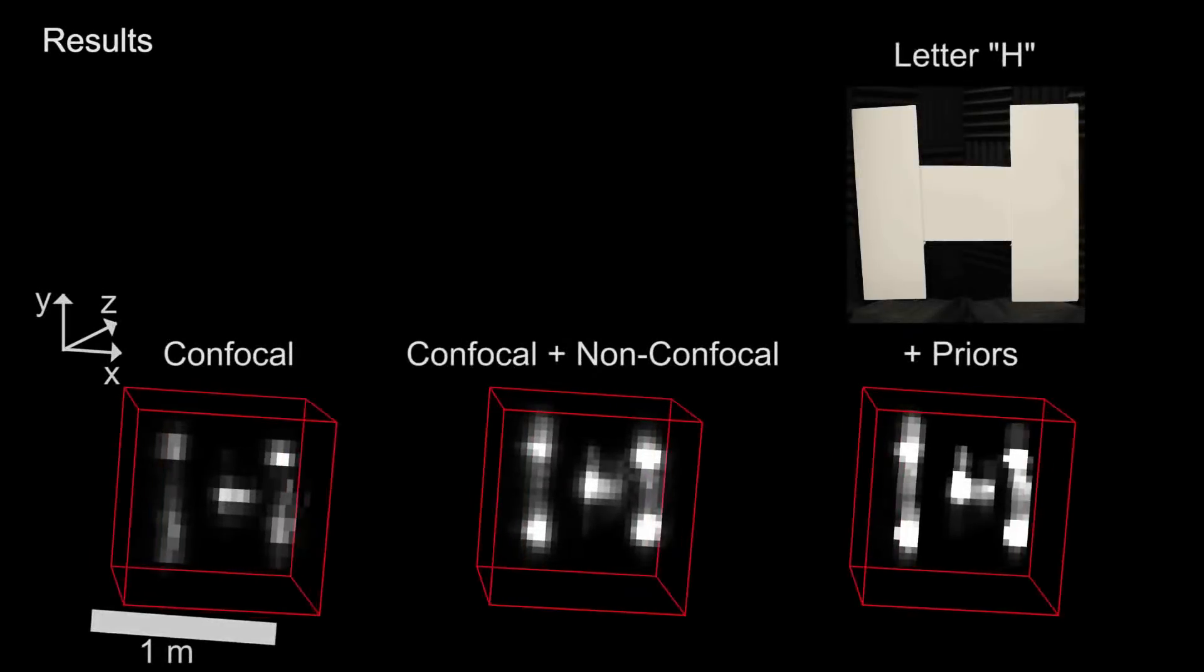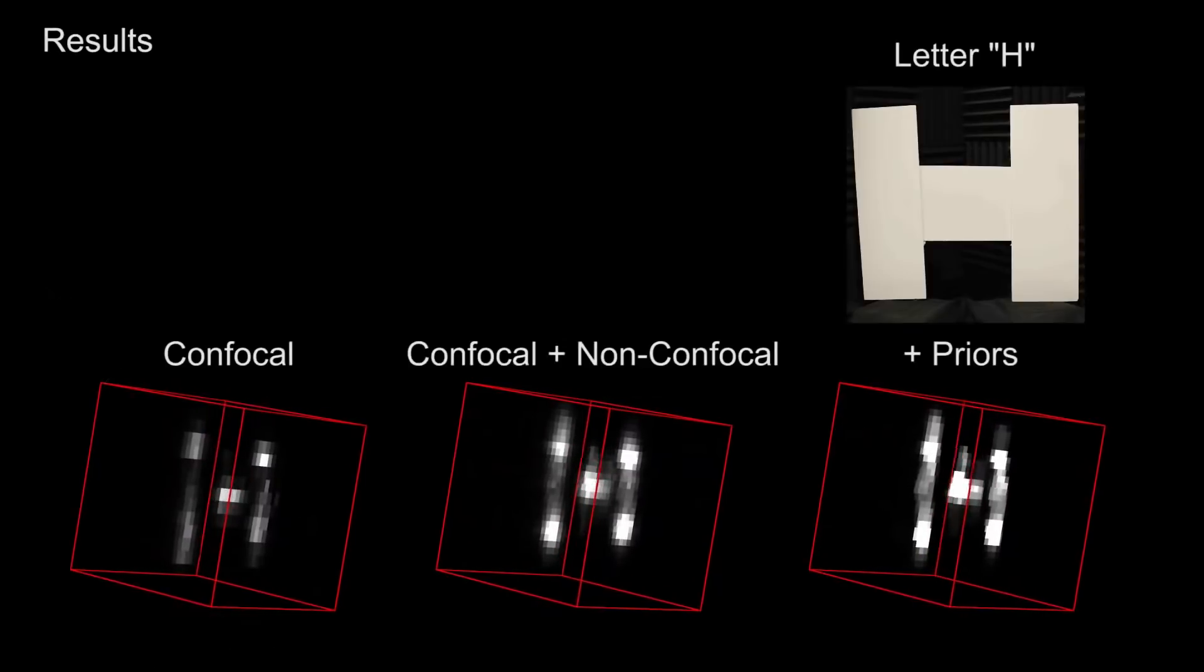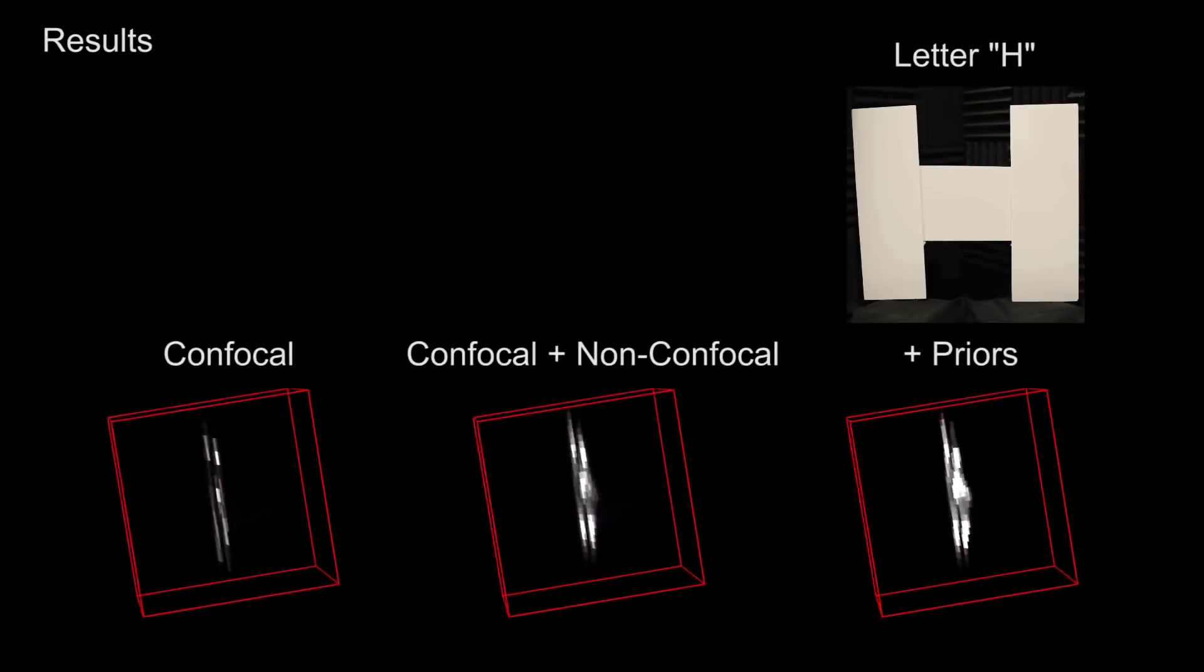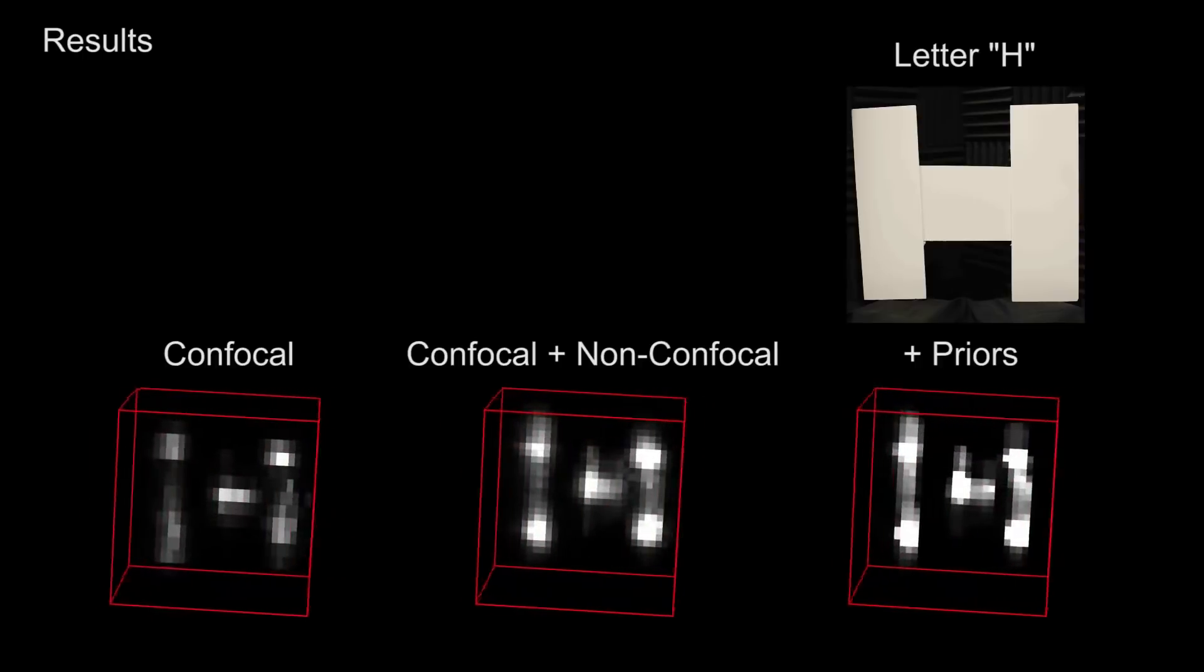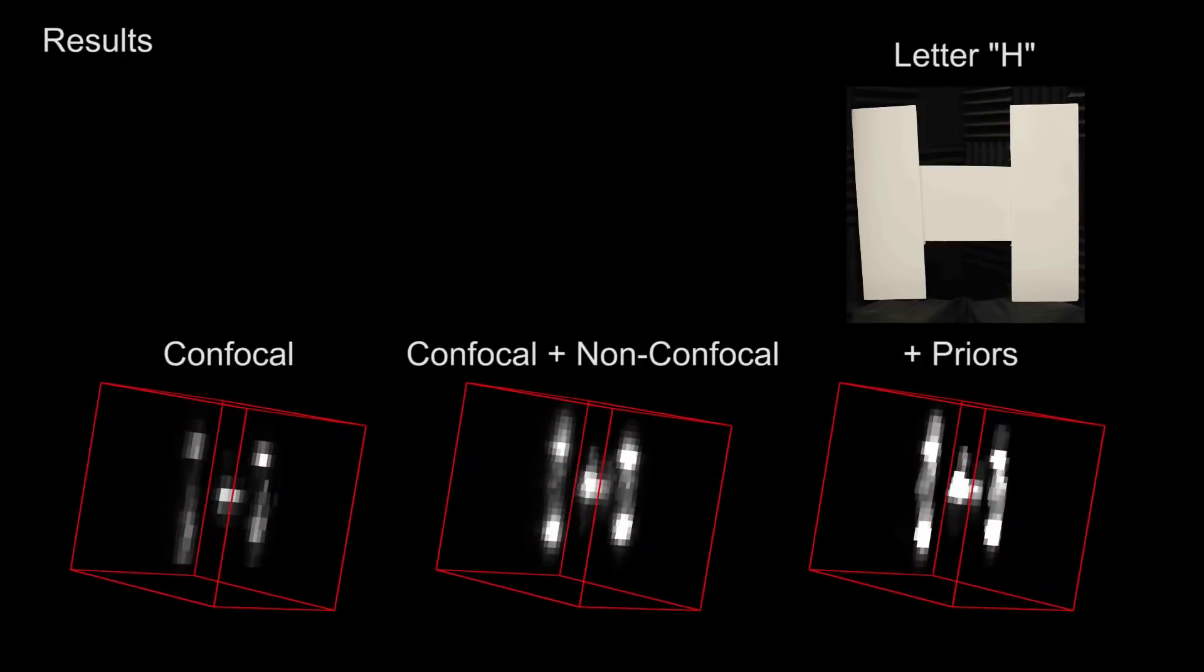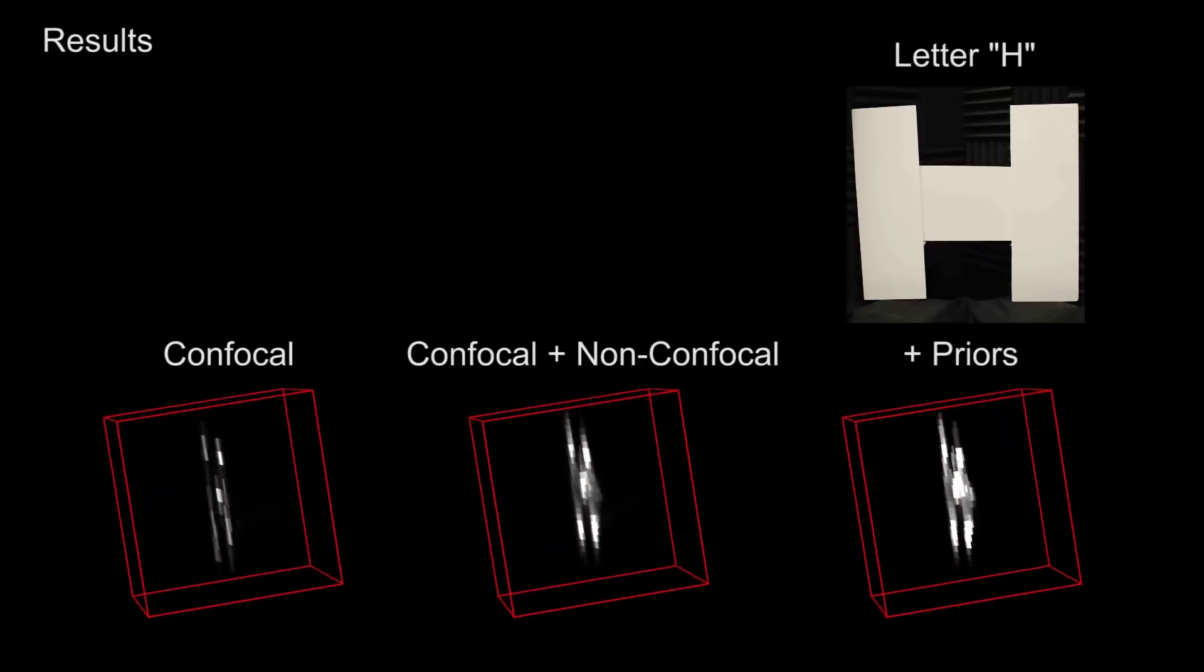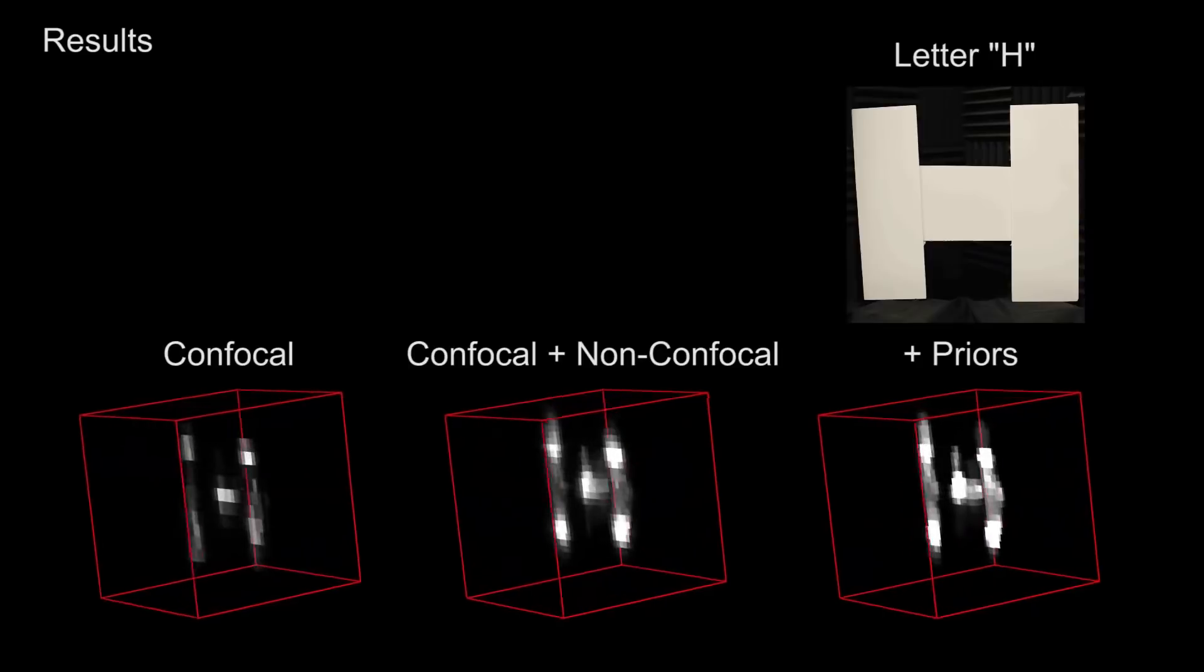This captured scene shows the reconstructed shape of a cut-out letter made of foam board for only the confocal measurements, for all measurements, and with additional priors on the reconstructed volume. We position the letter around the corner at a distance of 2.2 meters from the acoustic array along the indirect path of propagation and angle the letter toward the direction of sound incident from the wall.